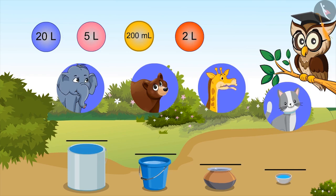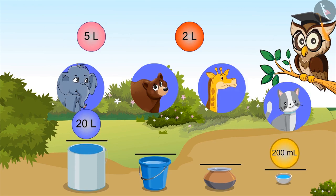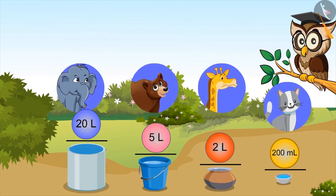Sir has just told that milliliters is smaller than liters. One thousand milliliters makes one liter. So two hundred milliliters is much less than one liter. According to me, a drum has a capacity of 20 liters. Very good! So the capacity of the bowl will be 200 ml. Right, now you all have got it. Capacity of bucket is 5 liters and capacity of utensil is 2 liters.